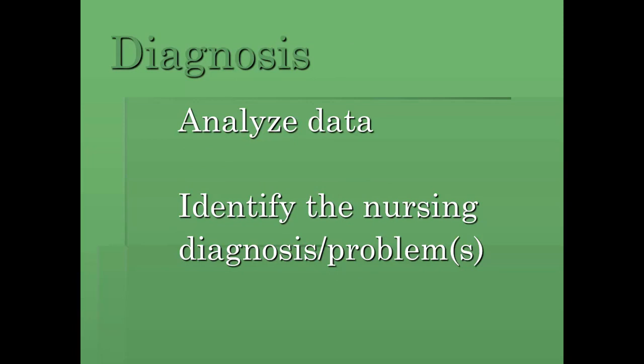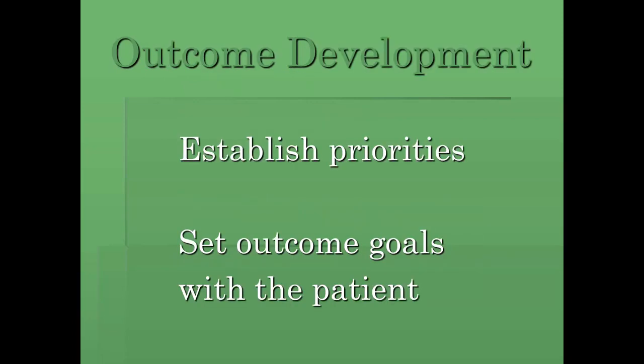The next phase is diagnosis, and this is a key step where we identify what the problem is. We critically analyze and interpret our collected data and begin to draw conclusions based on that data — what does this patient need, what kind of problems do they have, what are we seeing in their human responses? Then based on our diagnosis, we develop outcomes. Our third phase is outcome development, or goal setting, where we establish priorities and set our outcome goals. As much as possible, we want to include the patient in that process and have them on the same page with us.